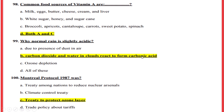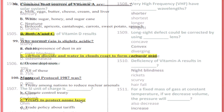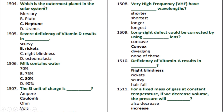The Montreal Protocol 1987 was — correct option C — to protect the ozone layer. Which is the outermost planet in the solar system? Correct option C — Neptune. Severe deficiency of vitamin D results in — correct option B — rickets. Milk contains — correct option C — 80% water. The SI unit of charge is — correct option B — coulomb.